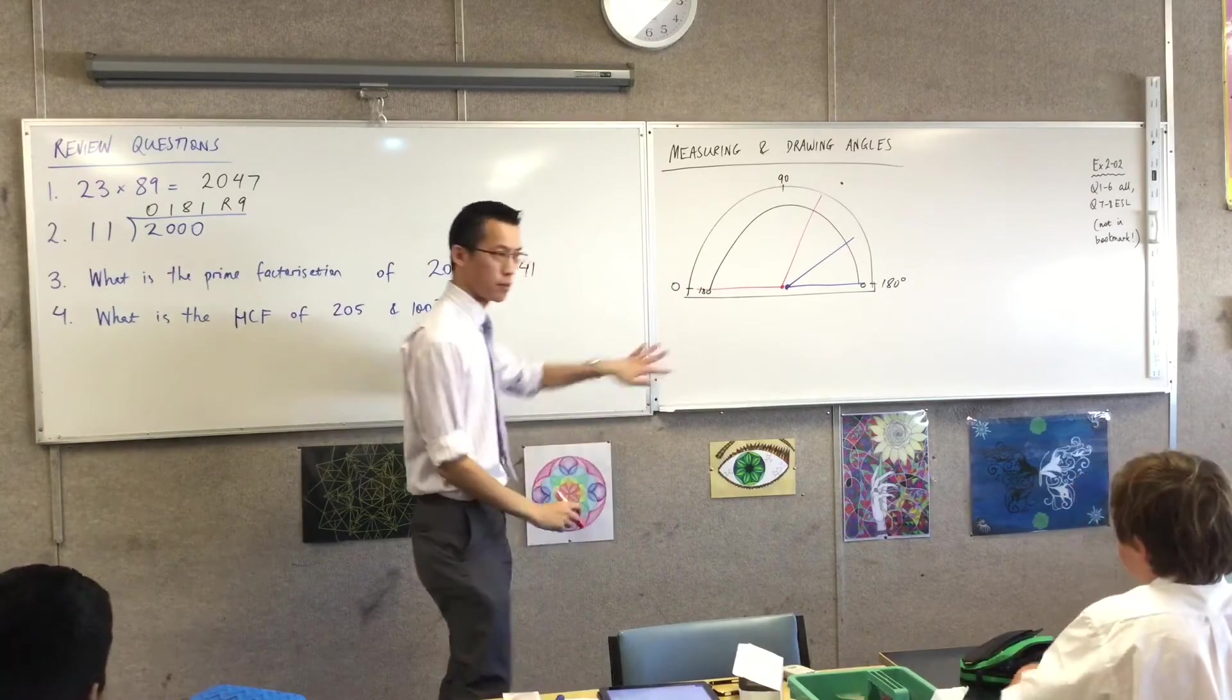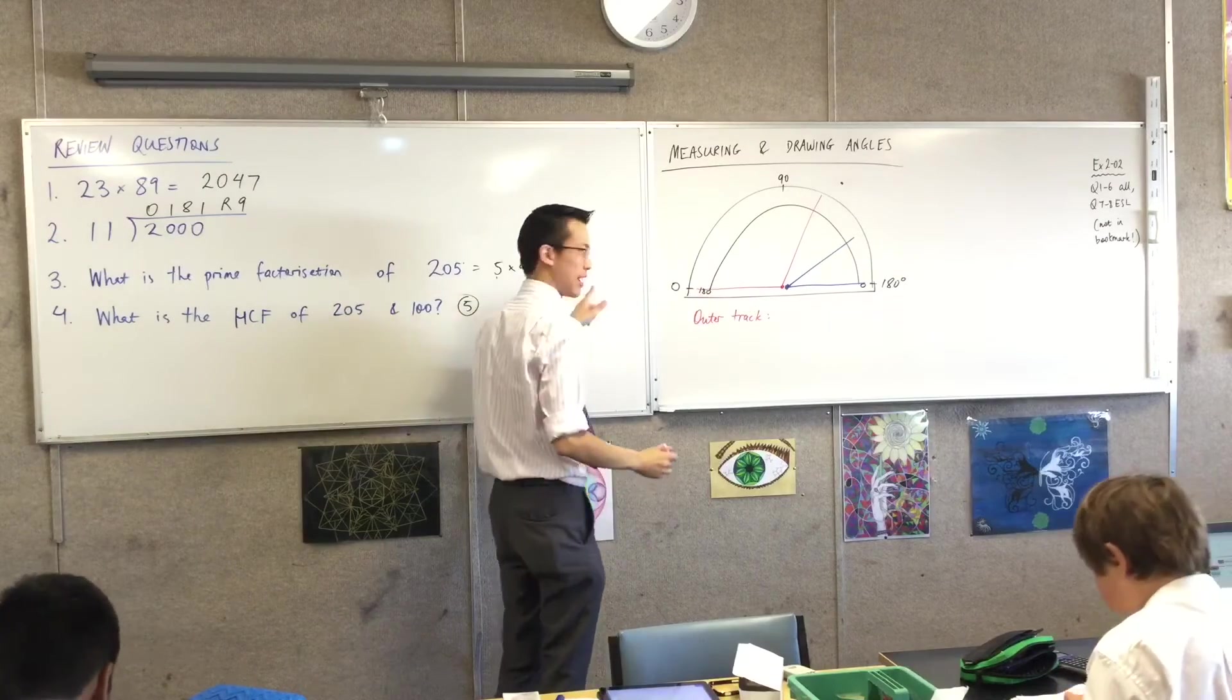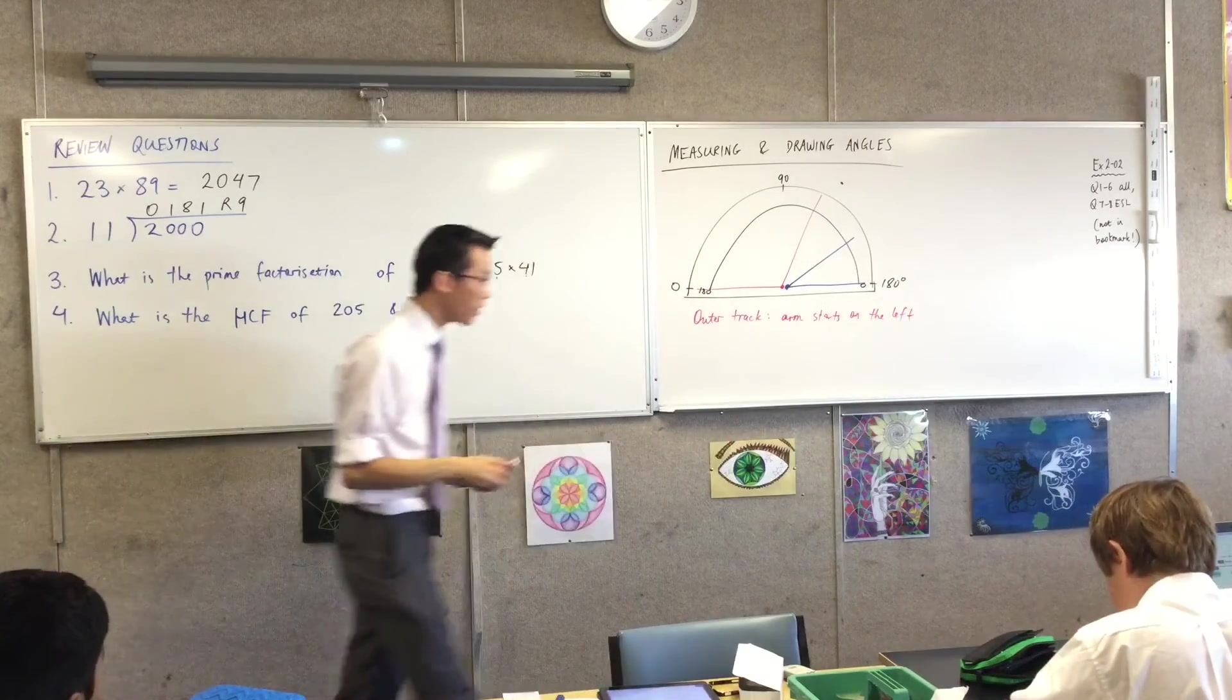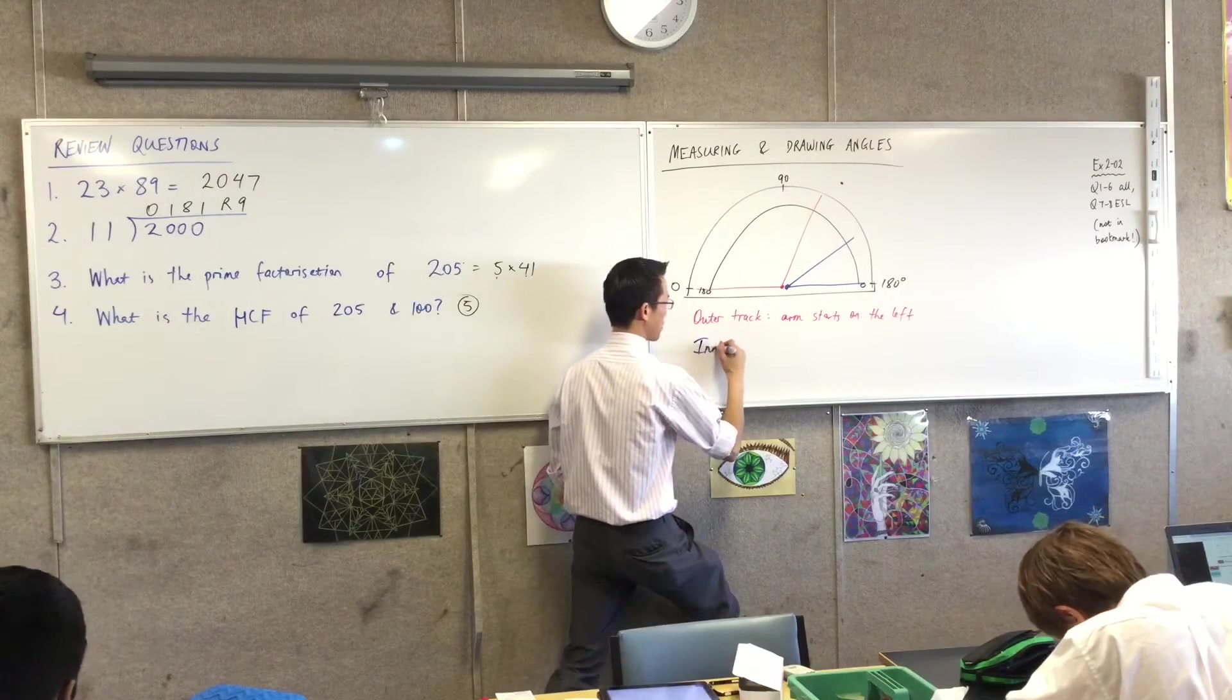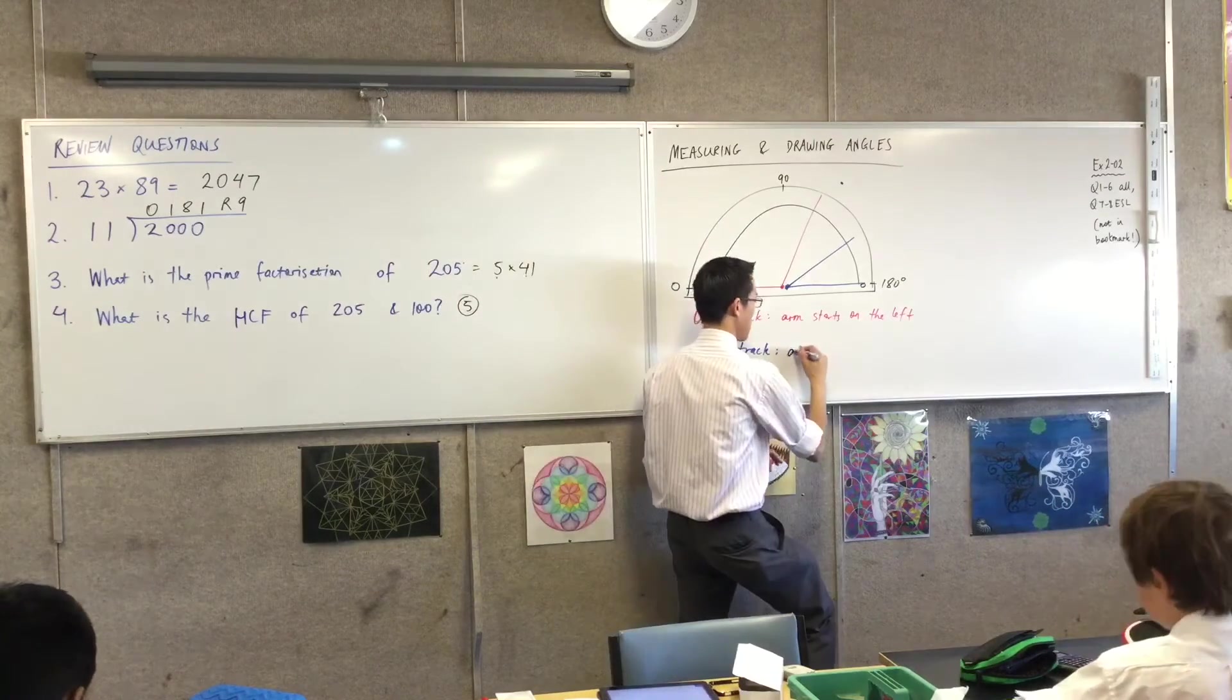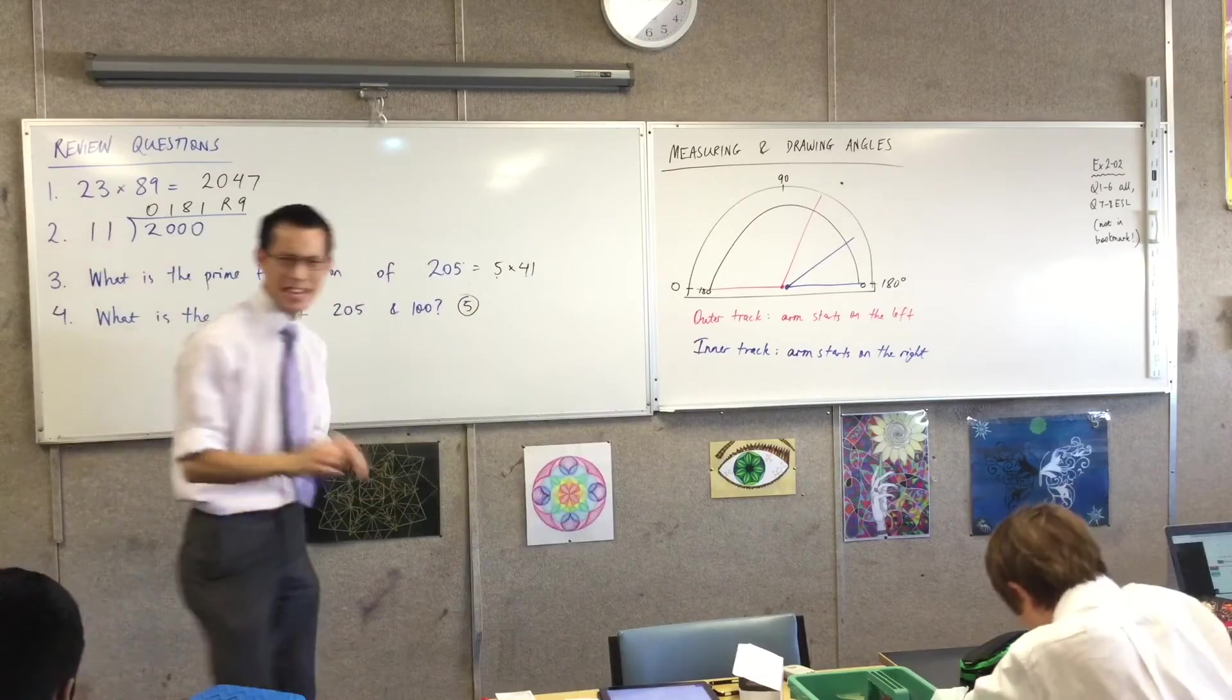So I guess, in summary, and maybe you're going to put this down underneath, right? The outer track—it's where the arm is going to the left, right? If the arm starts on the left, then you want the zero to be on the left, right? For the inner track, you do it the reverse. The inner track, and you can see it in blue there, is where my arm starts not on the left, but on the right. If my arm starts on the right, then I want zero on the right, because that's where I begin. Does that make sense?